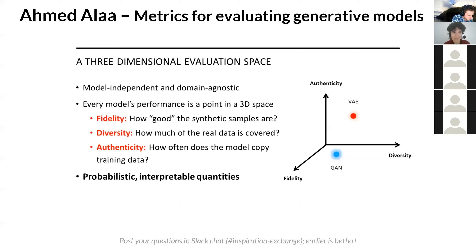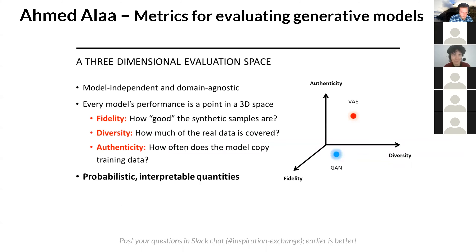So we introduce a new way to view the performance of generative models in a three-dimensional space — in a domain-independent and domain-agnostic way. We conceptualize the performance of any generative model as a point in a three-dimensional space where the first dimension represents the fidelity of the model, the second dimension represents the diversity of the samples created by the model, and the third dimension represents the authenticity of the samples created by the model.